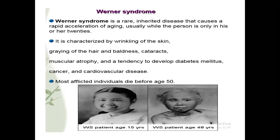The next disease of aging is Werner's Syndrome. Werner's Syndrome is a rare inherited disease that causes rapid acceleration of aging, usually while the person is only in their 20s. It is characterized by wrinkling of skin, graying of hair, and baldness. It is similar to progeria, but in this case, after 20 years of age, the person suddenly becomes old very quickly. The skin becomes dry, hair turns gray, and baldness occurs.